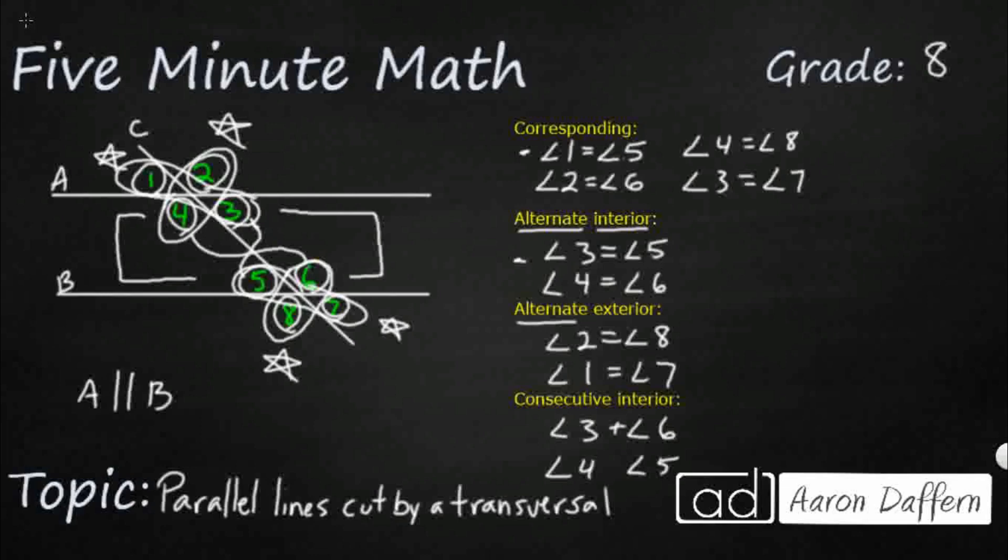But what we do know is that since they are consecutive and they're on the interior, if you add them up, those are actually supplementary angles. So we know that they are equal to 180 degrees. We know that angle 4 here is equal to angle 6, so angle 5 and angle 6 are supplementary. They make 180, so that makes sense.